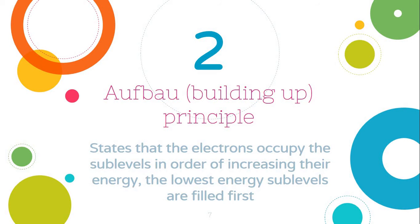Aufbau, or the building up principle, states that the electron occupies the sublevel in order of increasing their energy. The lowest energy sublevels are filled first.